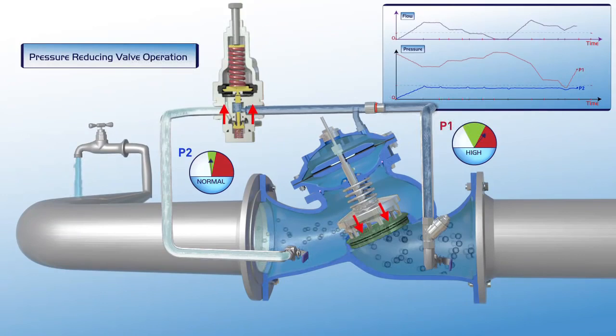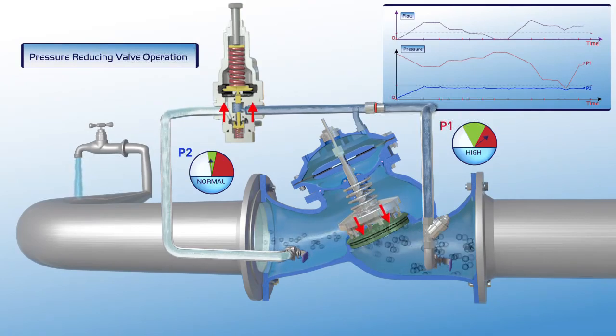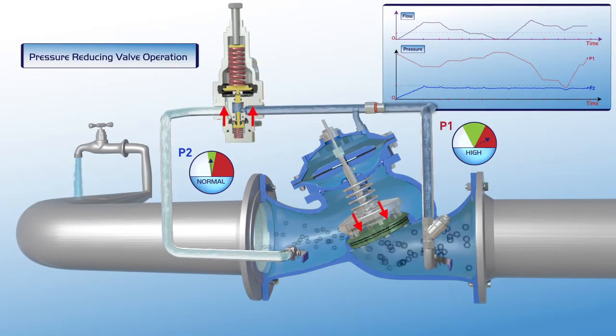When upstream pressure rises again, the valve responds by gradually closing slightly, thus maintaining P2 downstream pressure within its green zone settings.